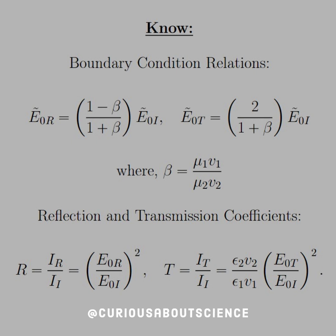What we need to know is our boundary conditions for these relations. Using the ẽ (tilde) notation, the complex amplitude of a reflection equals some coefficient times the incident amplitude. In this case it's (1 minus β) over (1 plus β), similarly to what we found earlier in the chapter. And then for the transmission we have 2 over (1 plus β), again in the tilde notation.